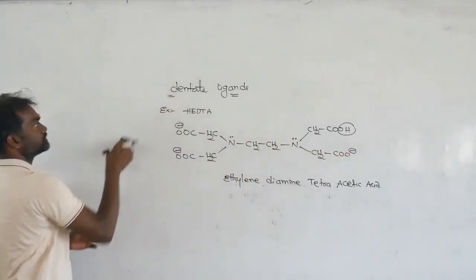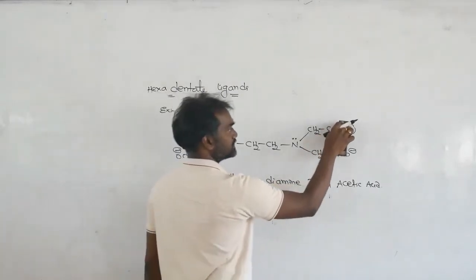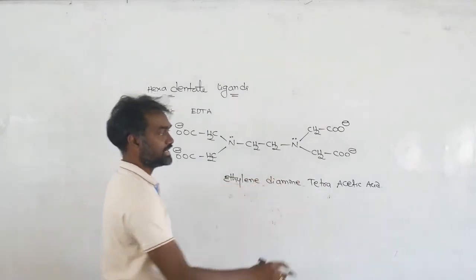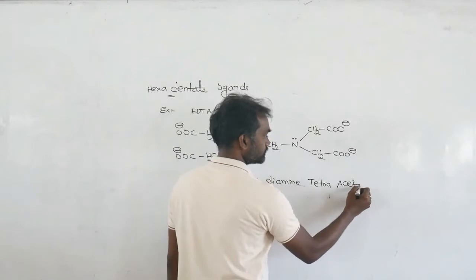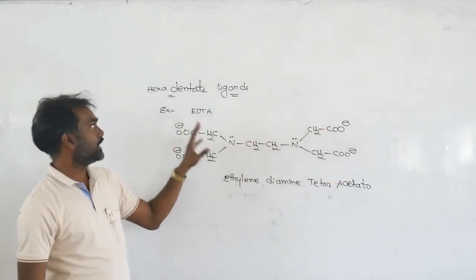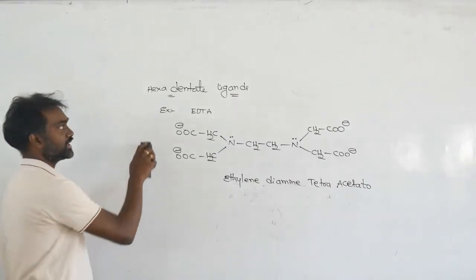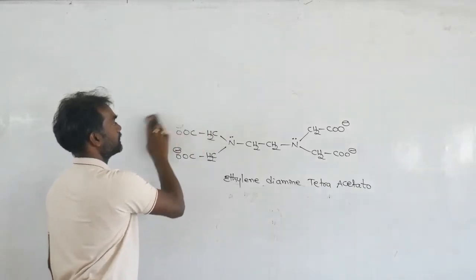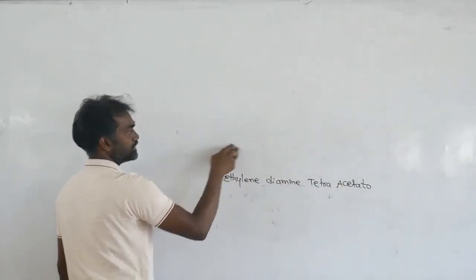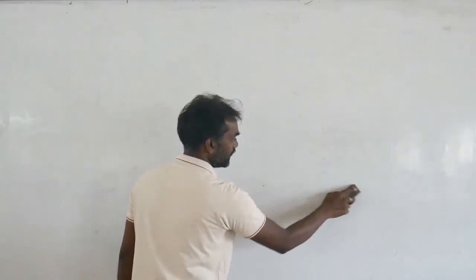Next is hexadentate. The example is EDTA — ethylene diamine tetra-acetate. Here instead of OH you have O-, giving six donor atoms: 1, 2, 3, 4, 5, 6 — hexadentate. So according to denticity, this is the famous EDTA. Also, bidentate, tridentate, tetradentate, and hexadentate ligands are collectively called polydentate ligands — ligands with more than one donor atom.